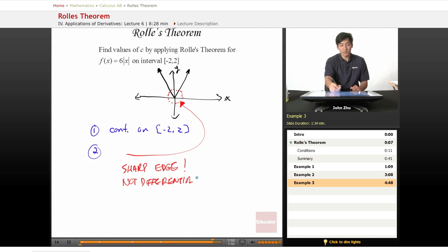And this means that we don't have to check the third condition because the second is not met and that's all that matters is that one condition is not met. So there is no value of c that applies to Rolle's theorem once again.